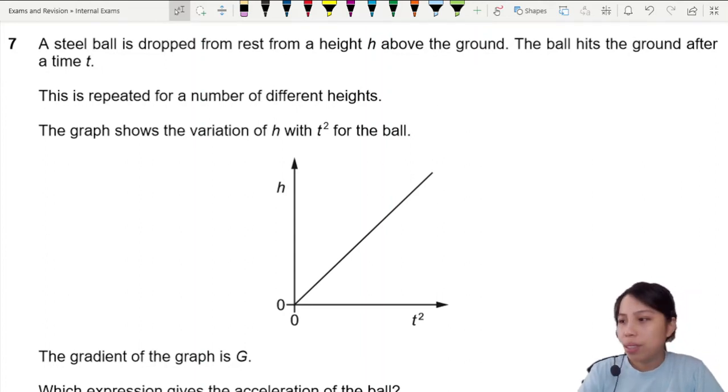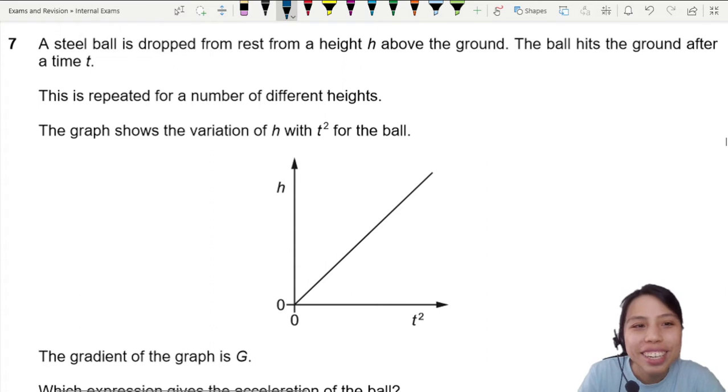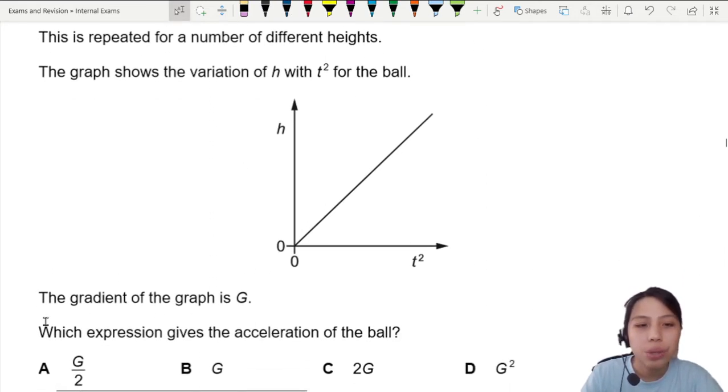A steel ball is dropped from rest from a height h above the ground. The ball hits the ground after a time t. This is repeated for a number of different heights. The graph shows the variation of h with t² for the ball. The gradient is G.